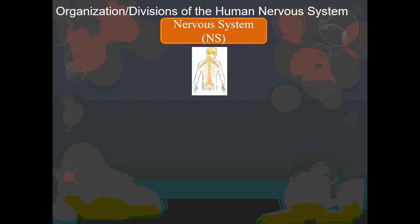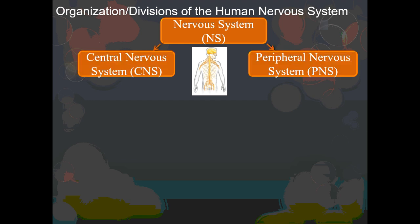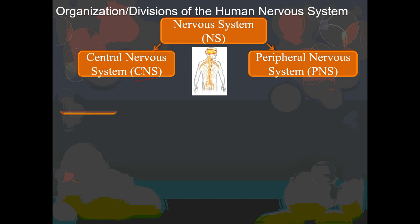The first major division is what's referred to as the central nervous system, also abbreviated CNS. The central nervous system really involves just two structures: the brain and the spinal cord, which run down the center of your body. That's why it is referred to as the central nervous system.